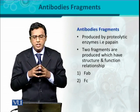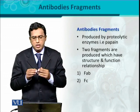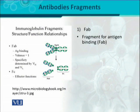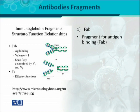After cleavage with papain, there are two important fragments of antibodies. The first one is the FAB fragment and the second is the FC fragment. FAB stands for Fragment for Antigen Binding — 'A' for antigen and 'B' for binding. In the figure, you can see that papain acts on the hinge region and cleaves it due to its proteolytic activity.